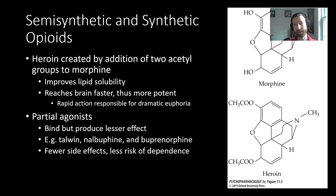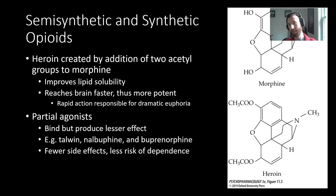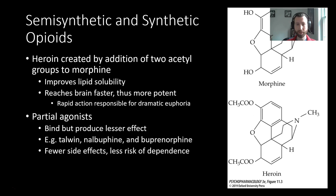There exist synthetic and semi-synthetic opioids, which are similar in structure to naturally occurring opioids but different in some important ways. One that you've likely heard of is heroin, which is created by the addition of two acetyl groups — this improves lipid solubility. If you remember back to our first unit on pharmacokinetics, enhanced lipid solubility means it's able to cross barriers faster and reach sites of target action, like the central nervous system, much more quickly. Because the brain is reached much more quickly, it's much more potent, and that rapid action is responsible for the dramatic euphoric effects of things like heroin.